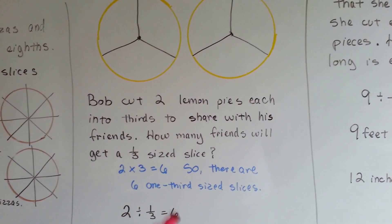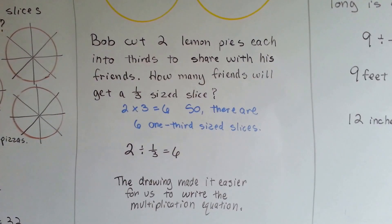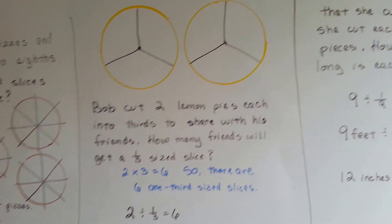Two divided by one third is six. See? Two times three is six. Wasn't that easy? So the drawing made it easier for us to write this multiplication equation.